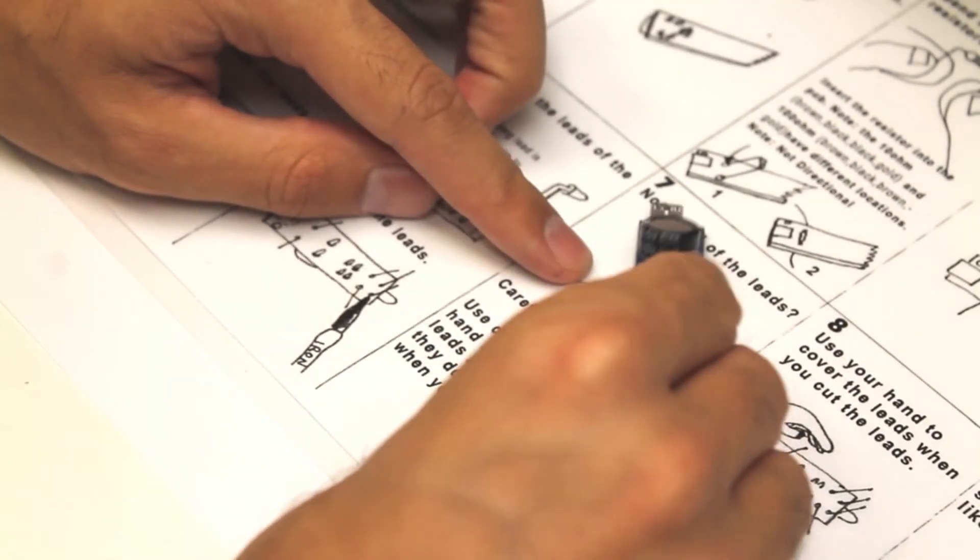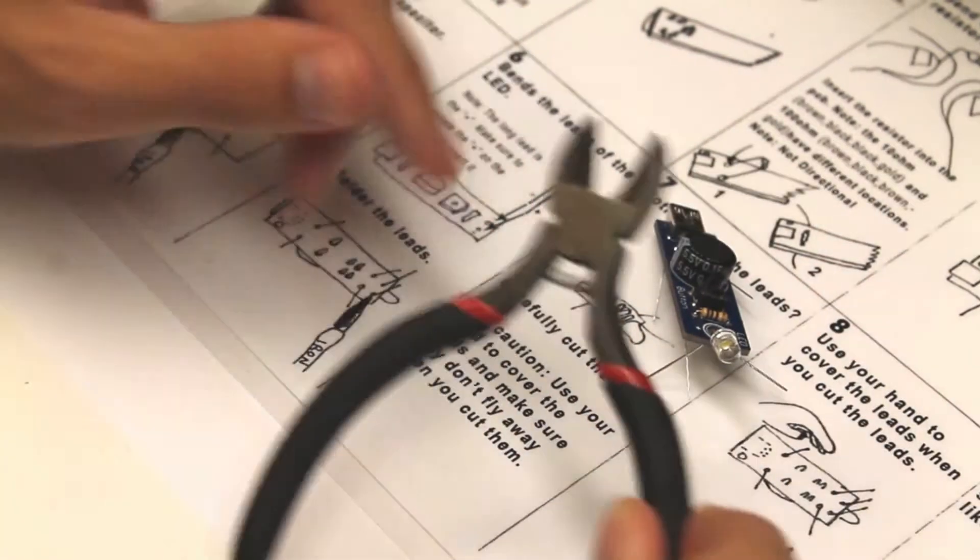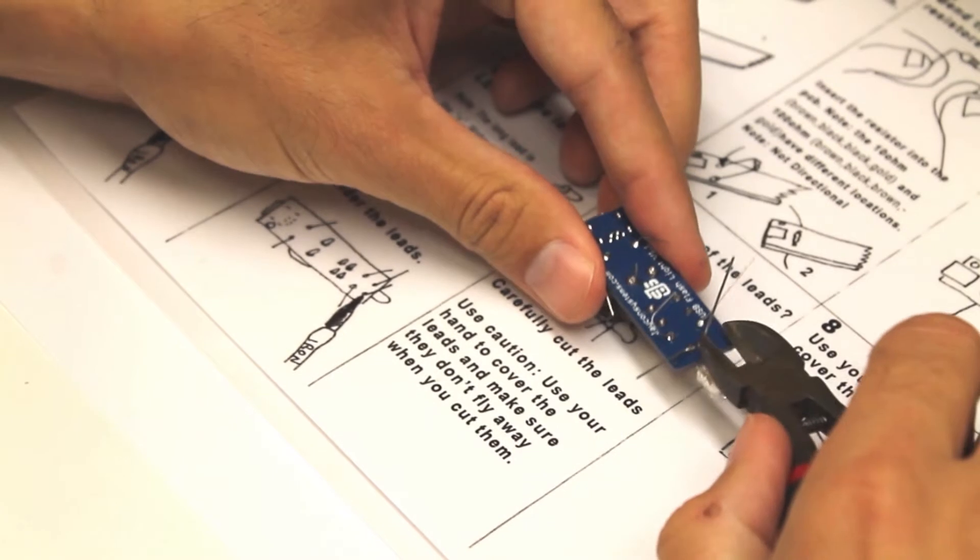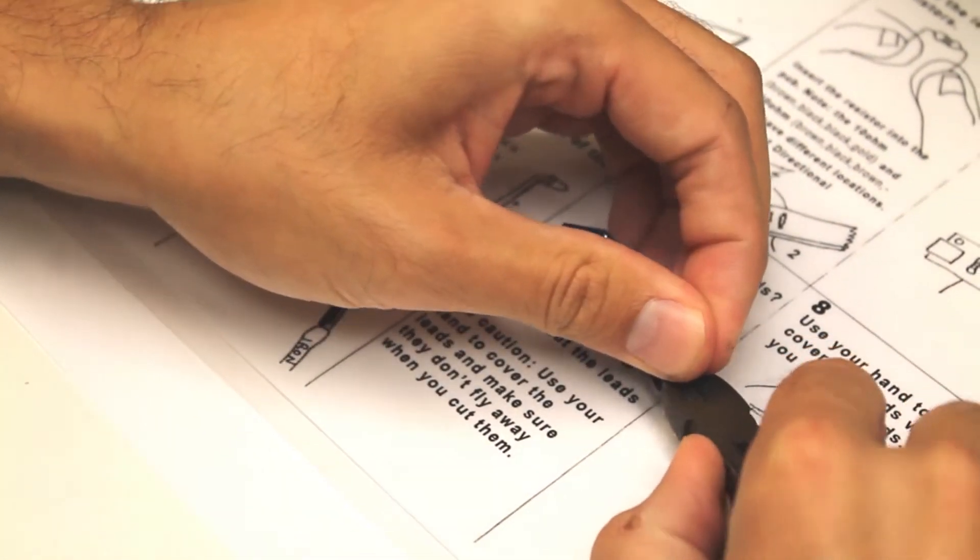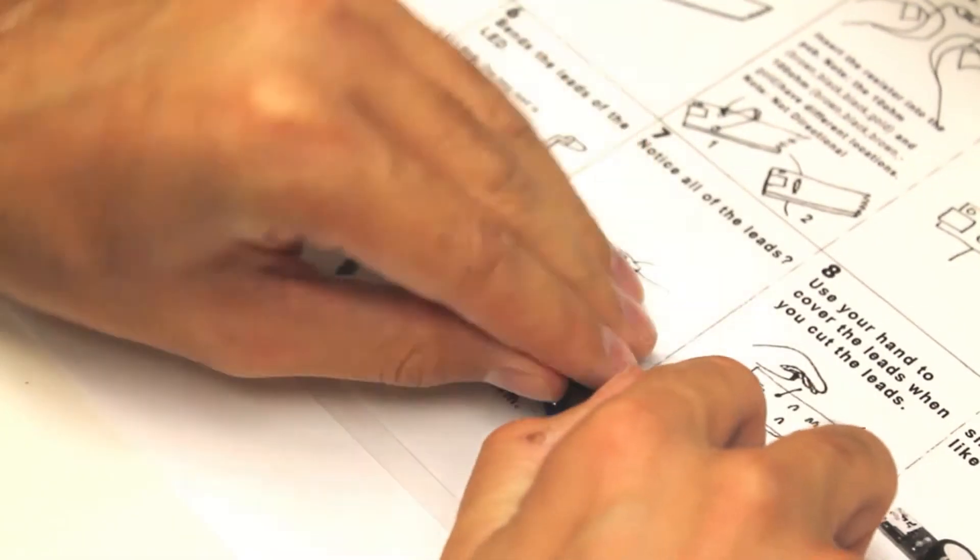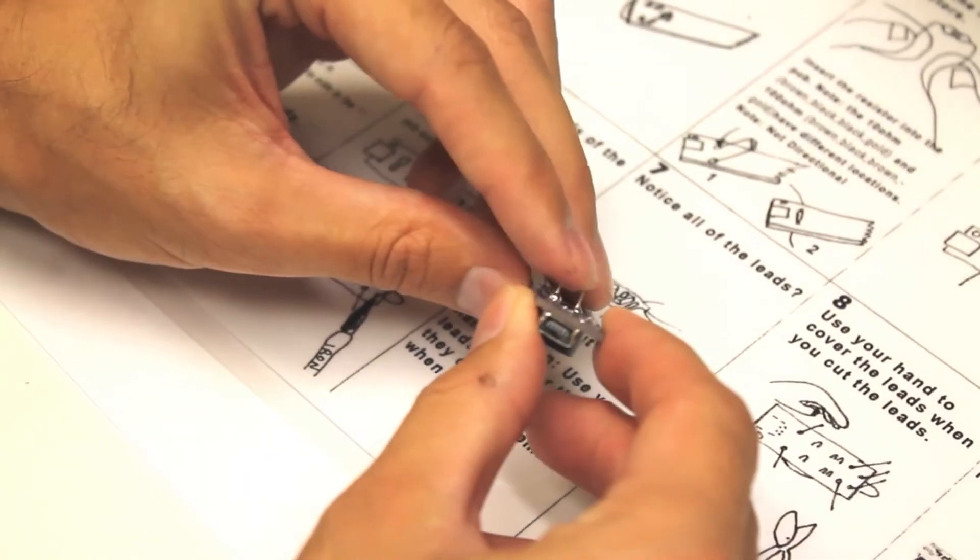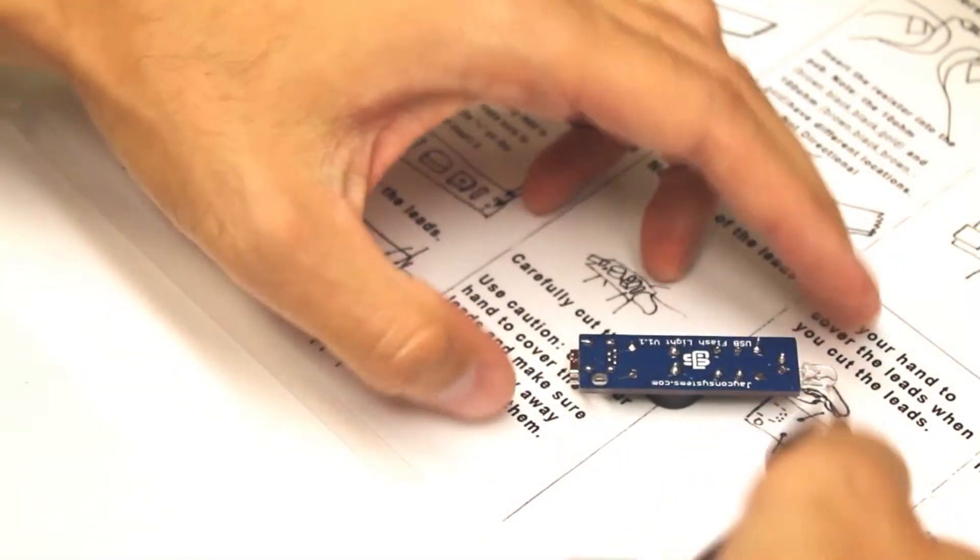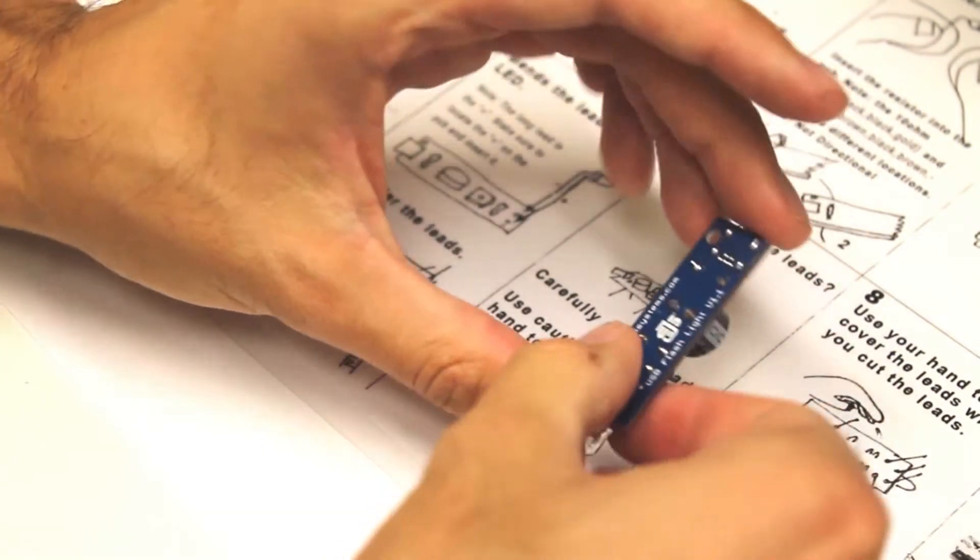And we notice all the leads are kind of goofy. It looks like a little animal trying to walk. Let's go ahead and locate our cutting tool and we're going to carefully remove all these extra leads. Make sure to cover your eyes and cover the PCB so that no leads fly into your eyes. Use caution. Now that we've cut the leads, we're nearly finished.